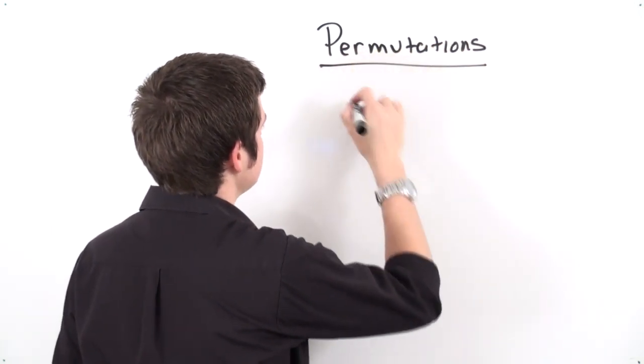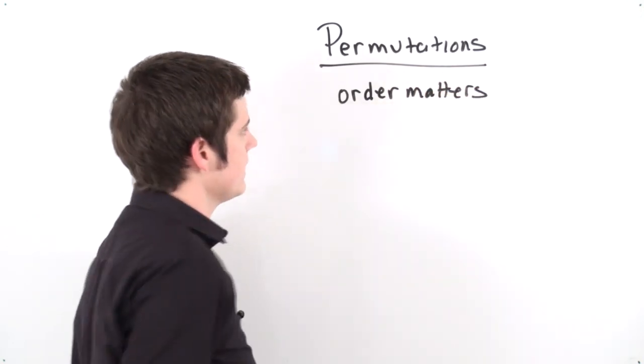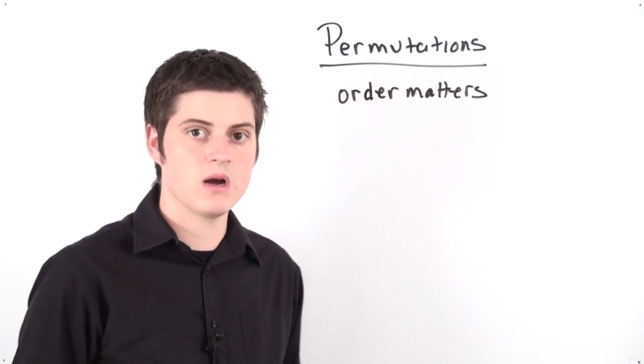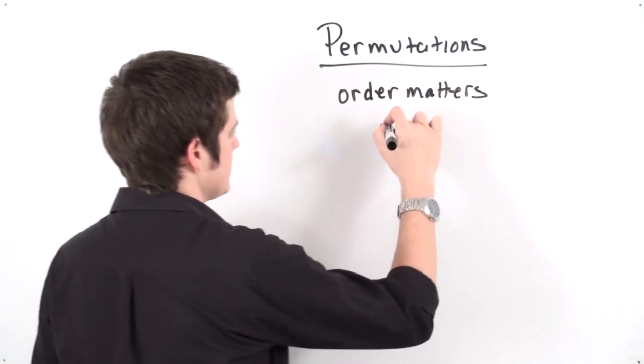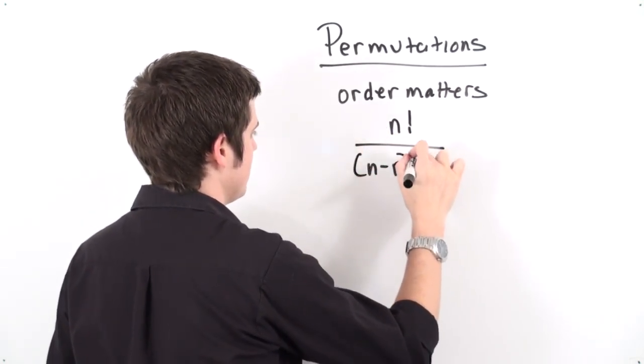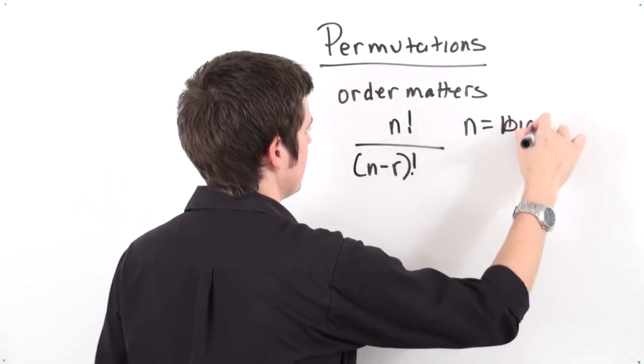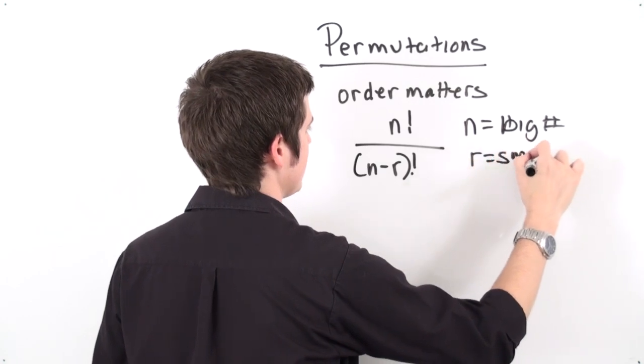A good thing to remember about permutations is that the order will matter. Whenever we're dealing with a permutation type problem, you want to remember a formula that's going to be n factorial divided by n minus r factorial, where n represents the big number and r represents the small number.